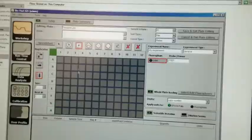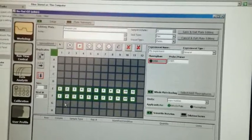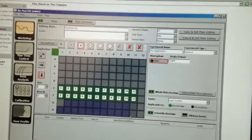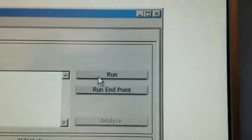Select the appropriate protocol from the protocol menu, this time using the 60 degrees Celsius annealing protocol. Edit the plate so that the samples are in duplicates. Load your plate into the machine and run qPCR.